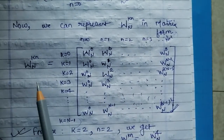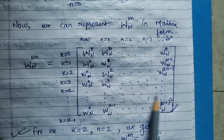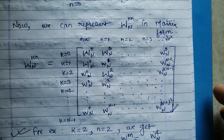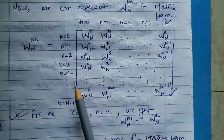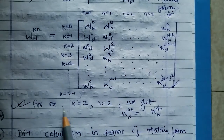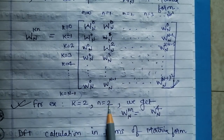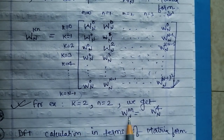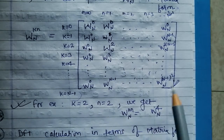This way it is easy to represent the twiddle factor in matrix form. For example, if k equals 2 and n equals 2, then W_N raised to k·n equals W_N raised to 4.